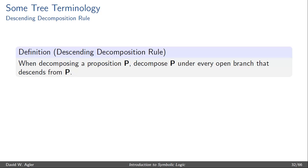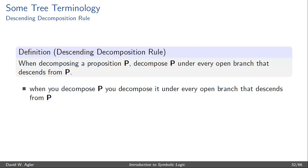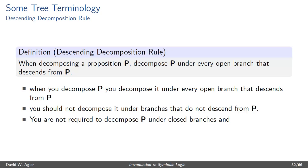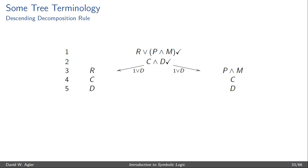Lastly, the descending decomposition rule is less a term for describing some part of the tree and more a rule for explaining how certain formulas found in the tree are decomposed. The descending decomposition rule states that when decomposing a proposition or formula P, it's necessary to decompose P under every open branch that descends from it. When you decompose P, you only need to decompose it under every open branch that descends from P — you're not required to decompose it under branches that do not descend from P, and you're not required to decompose P under closed branches, only the open branches.